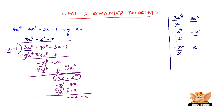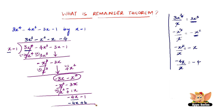Dividing minus 4x by x gives minus 4 — the last term of the quotient. Minus 4 into x is minus 4x, and minus 4 into minus 1 is plus 4. Subtracting and changing signs, minus 4x and plus 4x cancel, and minus 1 minus 4 gives minus 5. So we have a remainder of minus 5.